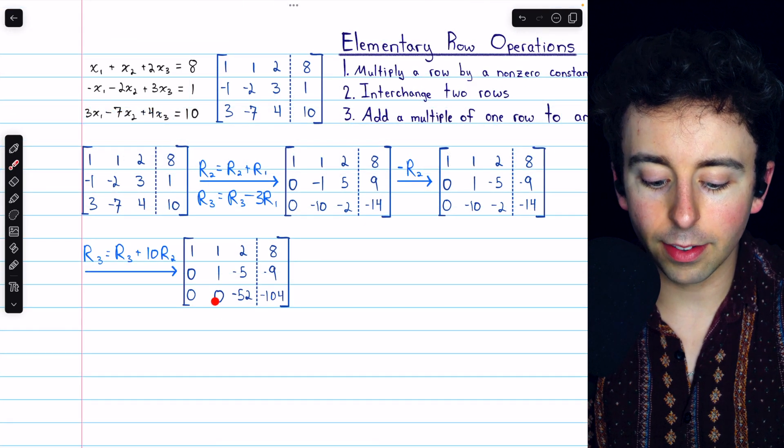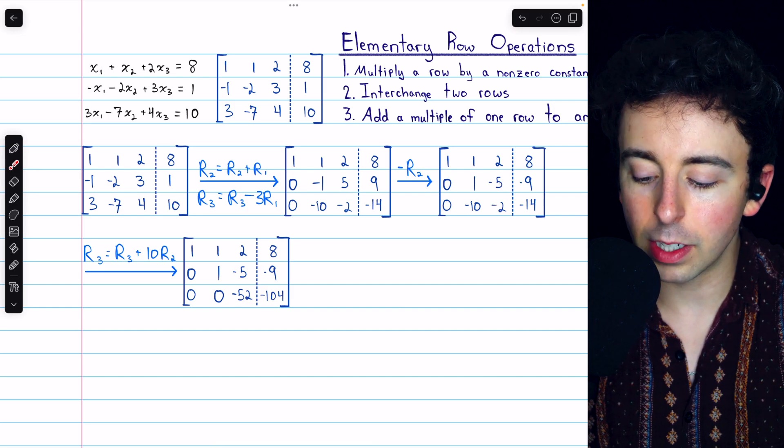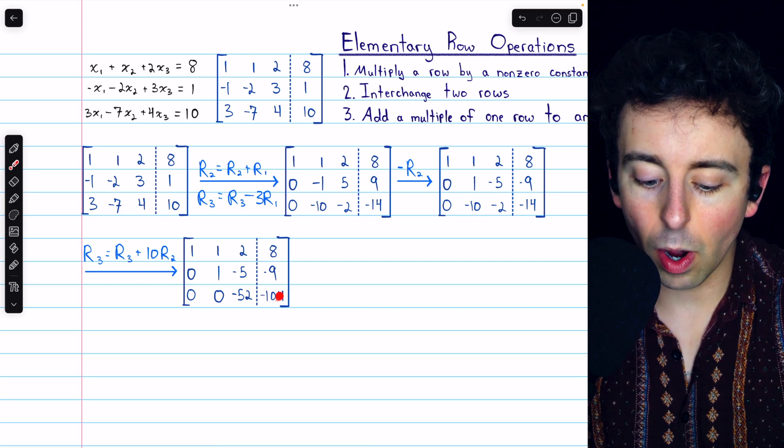Negative 10 plus 10 times 1 is 0. Negative 2 plus 10 times negative 5 is negative 52. And negative 14 plus 10 times negative 9 is negative 104.